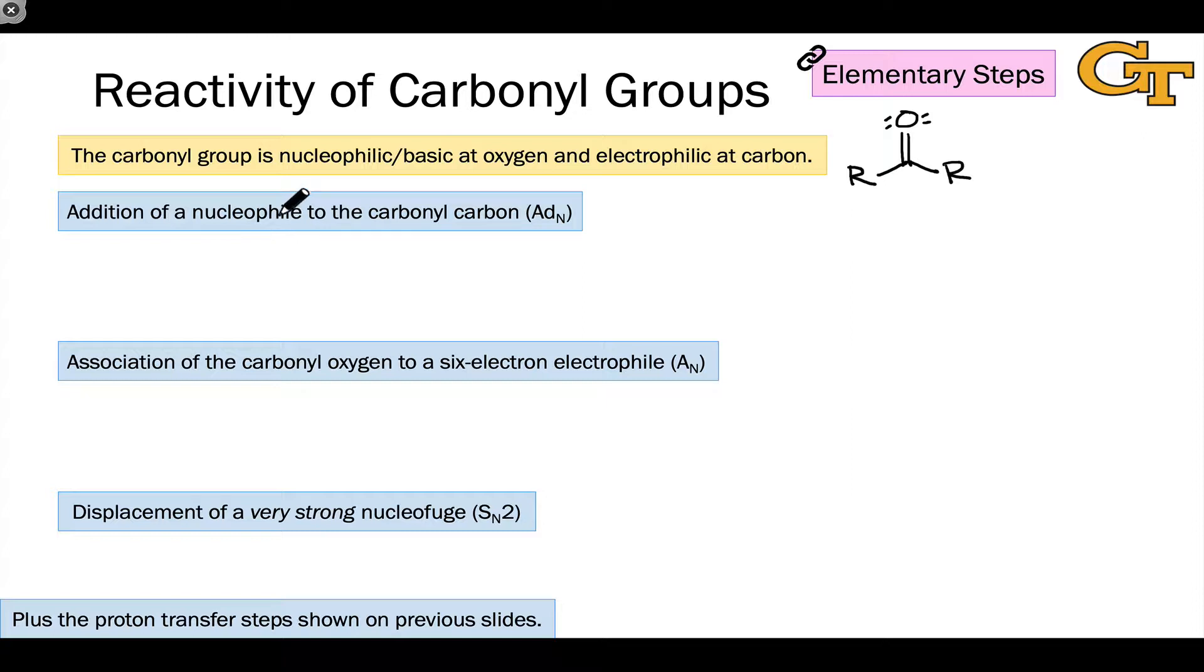There are two important things to keep in mind for the general reactivity of a neutral carbonyl group. First, the oxygen of the CO double bond is nucleophilic and basic, and second, the carbonyl carbon is electrophilic. We have a Lewis base at the oxygen, primarily as a result of these two non-bonding lone pairs, and a Lewis acid at the carbonyl carbon as a result of its relatively low electronegativity and the fact that the CO pi bond is polarized toward oxygen.